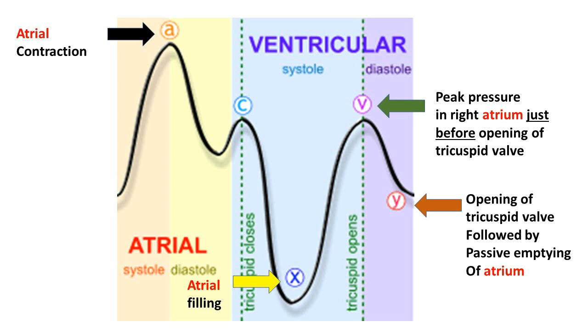In a healthy individual, the most prominent positive deflection is the A wave, and the most prominent negative deflection is the X descent in the normal jugular venous pulse.